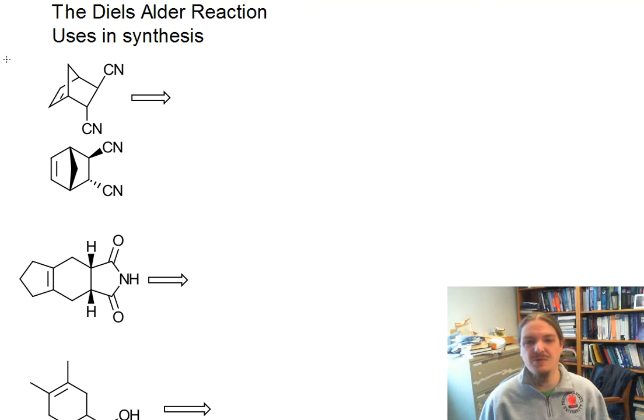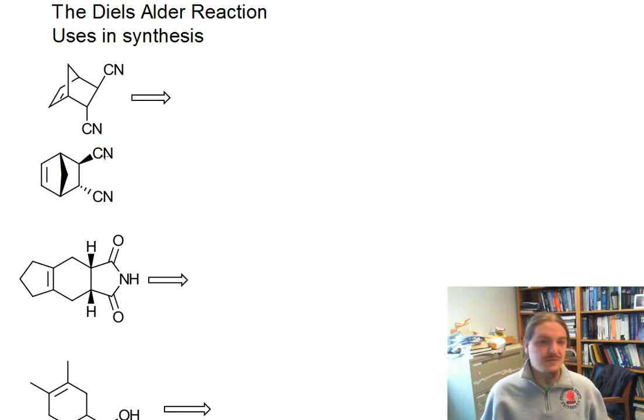The Diels-Alder reaction is a reaction where you can pretty quickly take simple-looking compounds and react them to make complicated-looking compounds. I want to do my worked examples on some complicated-looking compounds so that you can recognize that it's actually pretty easy to figure out where these came from. In my first example, I've got this bridged bicyclic molecule that I've decided to represent by the side-on view and the top-down view. It's got two nitrile functional groups on it, and they're trans to each other.